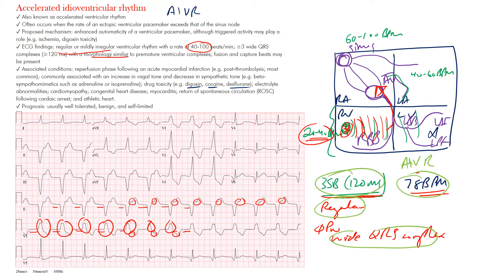It can even occur in the athletic heart when the sinus node slows due to increased vagal tone and an ectopic ventricular focus takes over. The key points: this is most common after acute MI, it's a wide complex rhythm, rate is between 40 and 100 bpm, you need at least three complexes, it's a regular rhythm, and P waves may be buried or occur after the QRS from retrograde conduction.